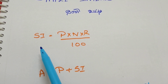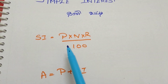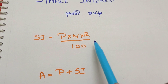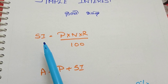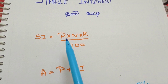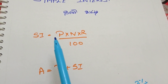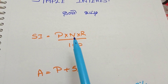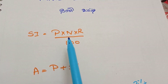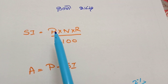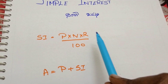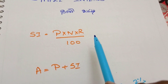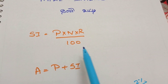Simple interest is equal to P into N into R by 100. P is the principal, N is the number of years, R is the rate of interest, and 100 is the denominator.